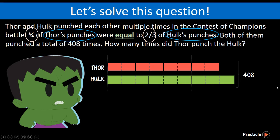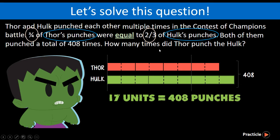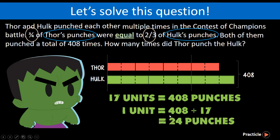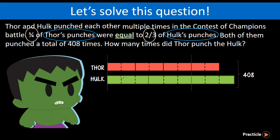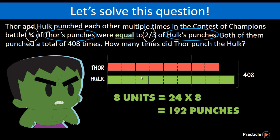Now that all the units are equal, simply by looking at the model, we can see that 17 units represent 408 punches. To find the number of times Thor punched Hork, we find the value of one unit by taking 408 divided by 17, which gives us 24 punches. Since one unit represents 24 punches, finding the value of 8 units is easy — 24 times 8 gives us 192 punches. Question solved!